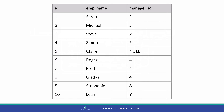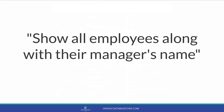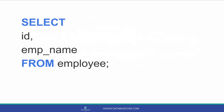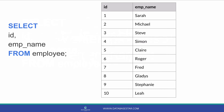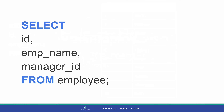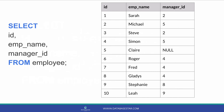Earlier in the video I mentioned that a self-join is the practice of joining a table to itself. Let's see an example. Say you wanted to list all of the employee names in the table along with the names of their manager. We can start by selecting from the employee table — selecting the employee ID and the name. We can also add the manager ID to our select clause.